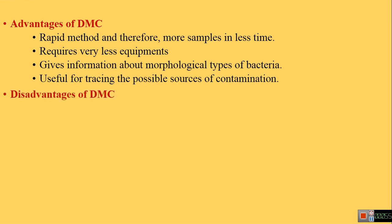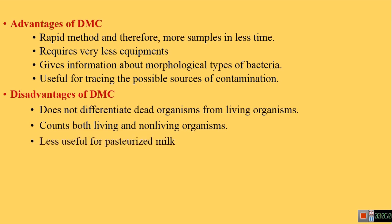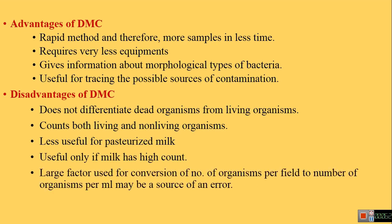The disadvantages of DMC are: it does not differentiate between dead and living organisms — it counts both. It is less useful for pasteurized milk because most organisms are dead during pasteurization. It is useful only if the milk has a high count. Also, the large conversion factor used — from bacteria per field to organisms per ml — may be a source of error.